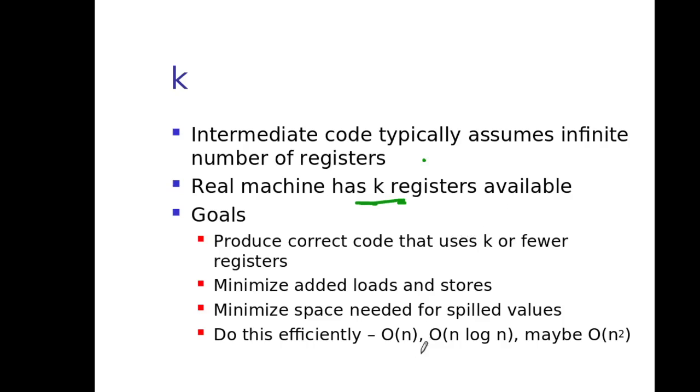While doing register allocation, we try to produce code that uses integer number k or fewer registers so that we could minimize the number of load and store operations, minimize the space needed for spilled values. If we could do these things in minimum time complexity - order of n is better, order of n log n maximum, order of n square.